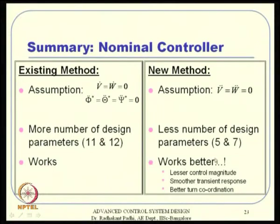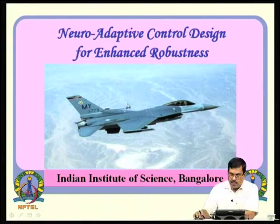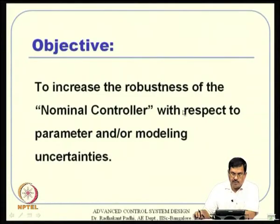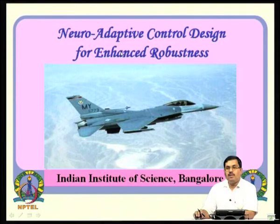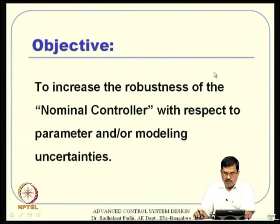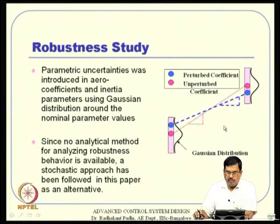The new method demonstrably works better: it produces less control magnitude, smoother transient response, virtually no non-minimum phase behavior, and better turn coordination (β close to 0). With fewer design parameters, it is also easier to tune. After validating the nominal control, we next experiment with neuro-adaptive control design to increase robustness against parameter inaccuracies in mass, inertia, and aerodynamic coefficients.